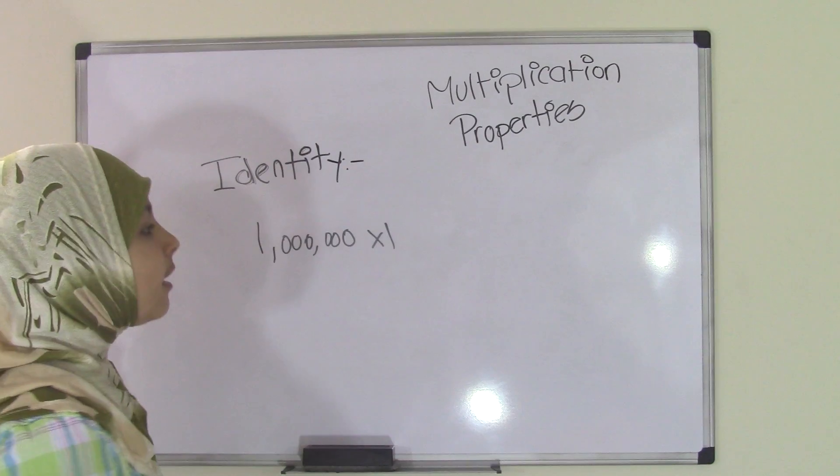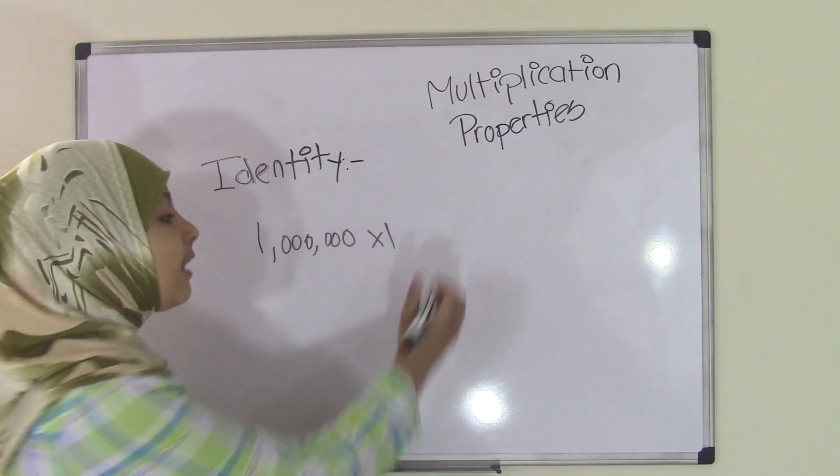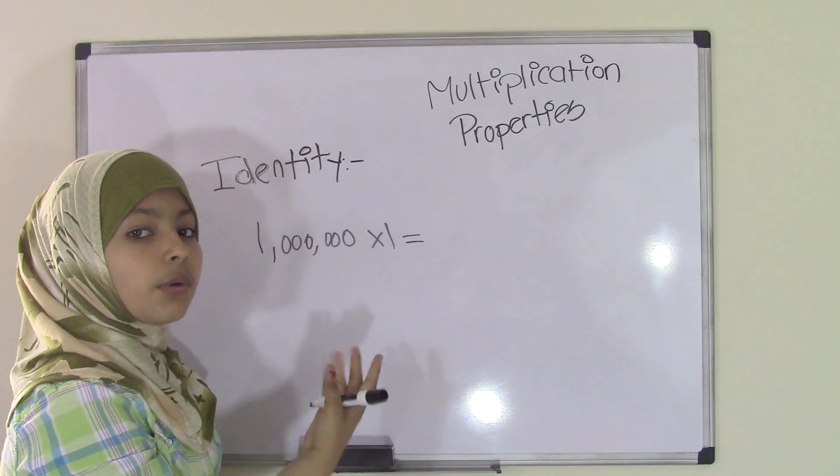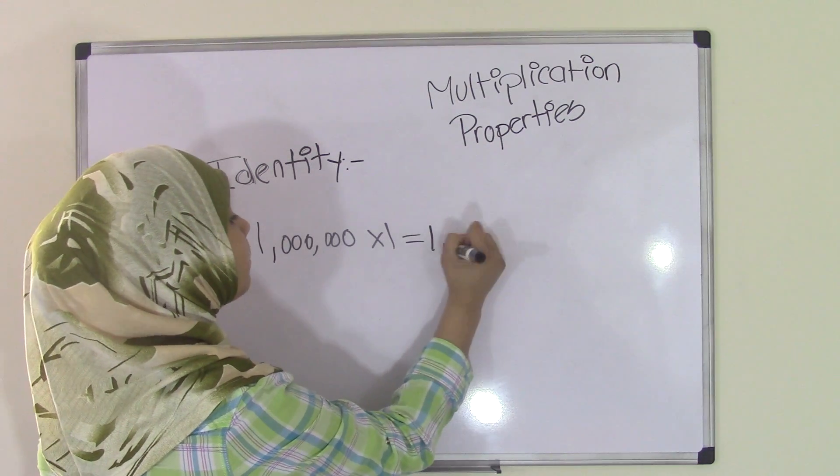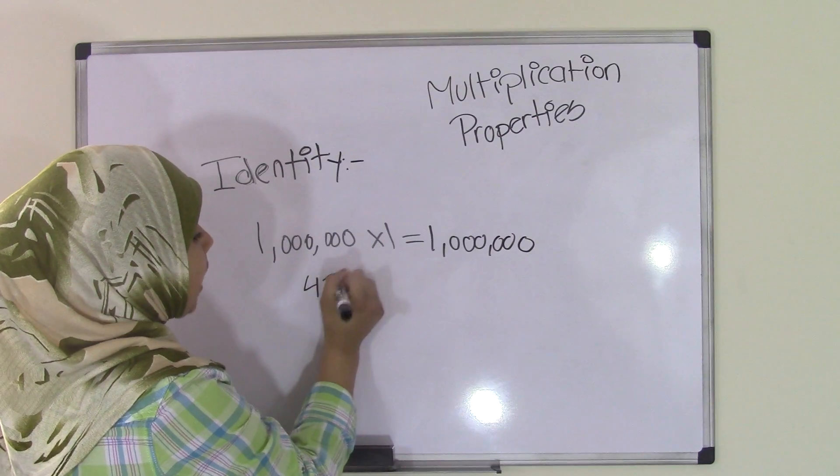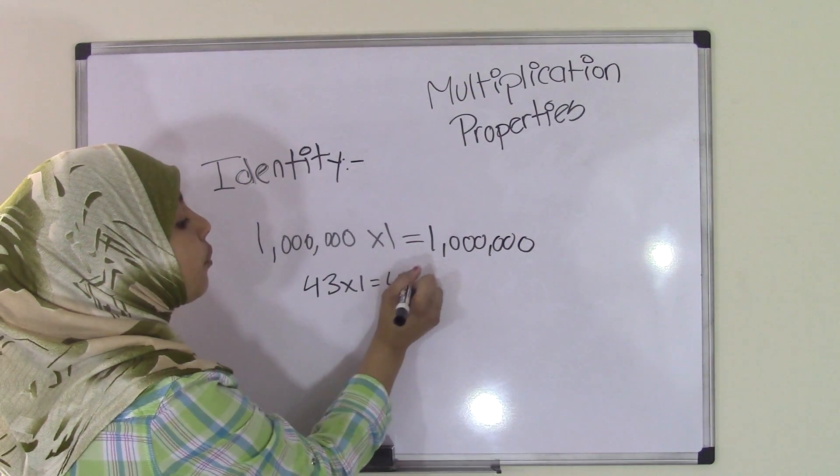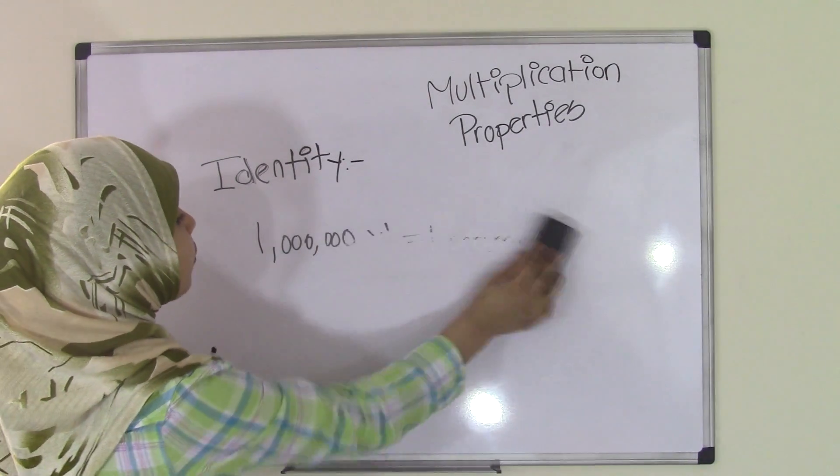But whenever you multiply it by 1, the value always equals the same thing. The product is always the same number. So 1 million times 1 will always equal 1 million. Let's say we have another smaller number, maybe like 43 times 1. It will still equal 43. So that's the identity property of multiplication, and I think this is one of the easiest ones.